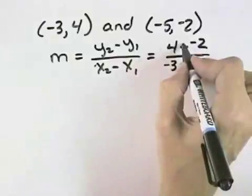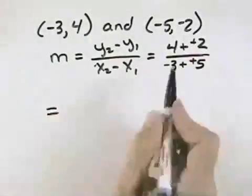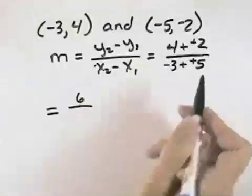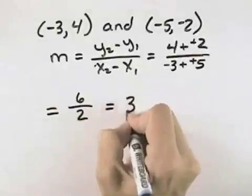Remembering that subtraction is plus the opposite, I can change each of those to plus a positive. So that my slope is 4 plus 2 is 6 in the numerator. Negative 3 plus 5 is 2 in the denominator, and this simplifies to 3.